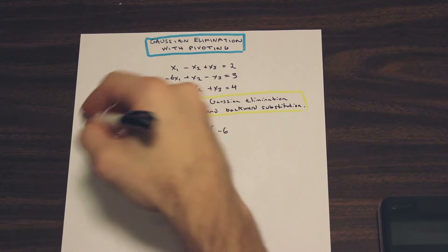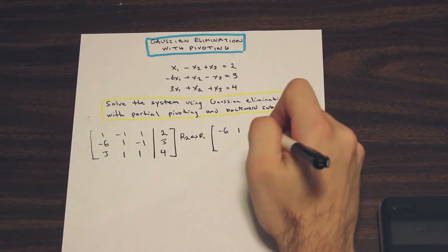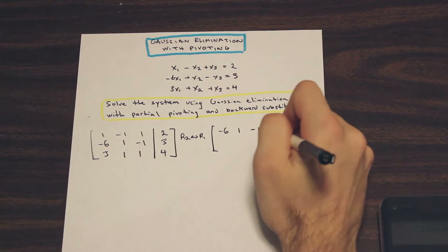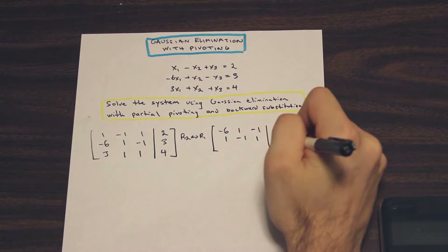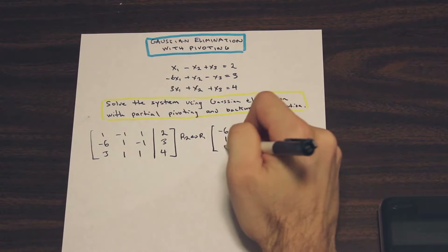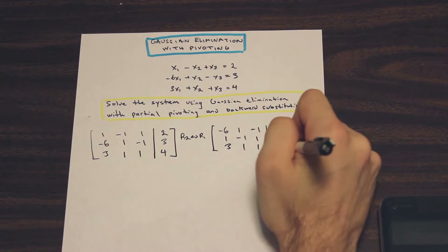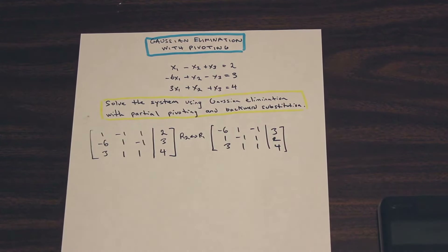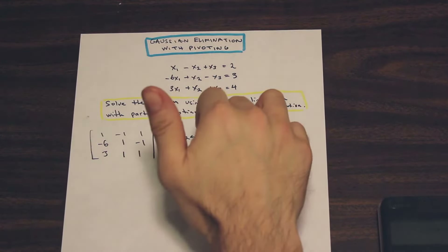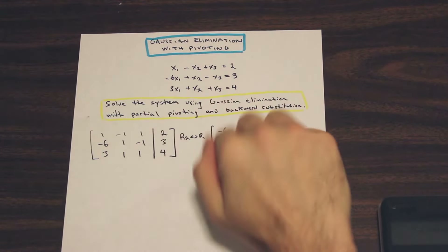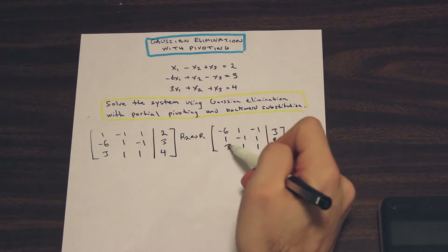The second row goes to the top. So we're going to have negative 6, 1, negative 1, 3 in the first row, then 1, negative 1, 1, 2, and 3, 1, 1, 4. Now what we're going to do is eliminate the second and third terms in the first column — we're going to eliminate this 1 and this 3.